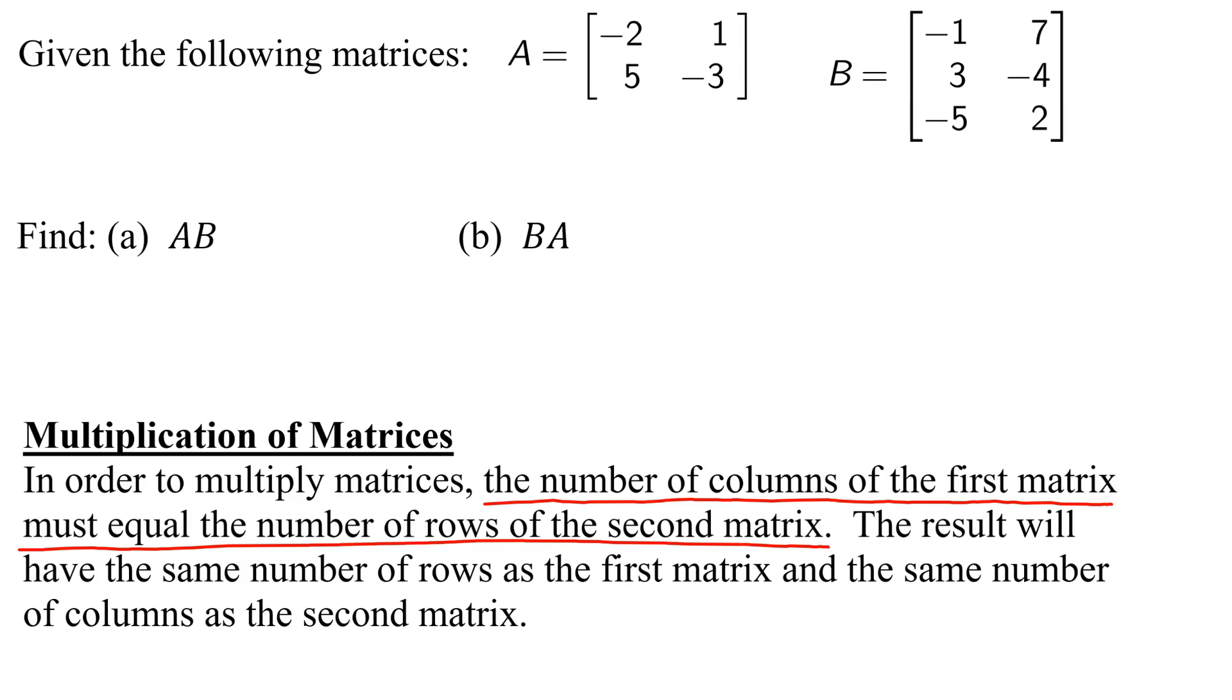So let's find the dimensions or order of each of our matrices. Remember, rows always come before columns. Matrix A has two rows and two columns, so it is a two by two matrix. Matrix B has three rows and two columns, so it is a three by two matrix.